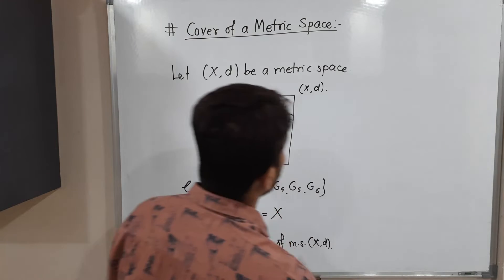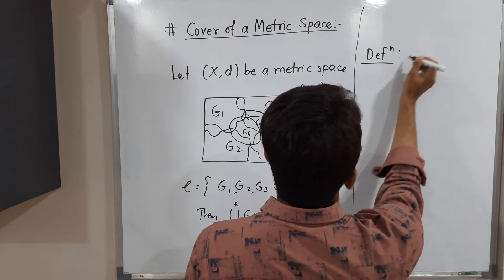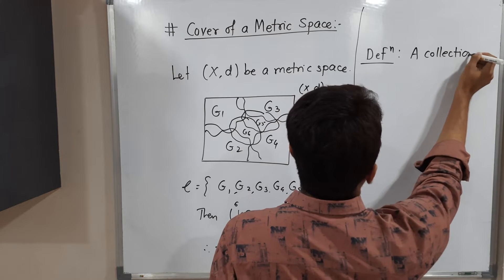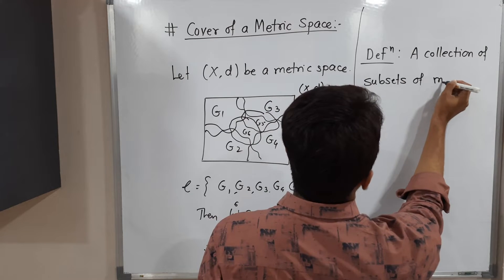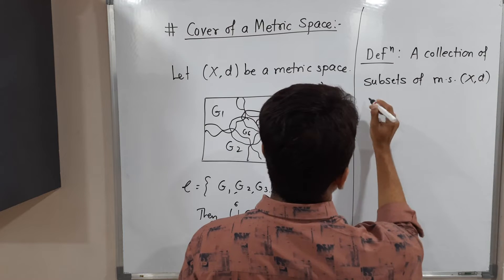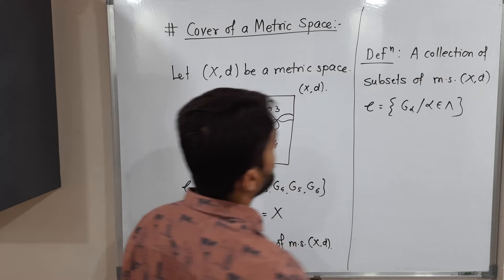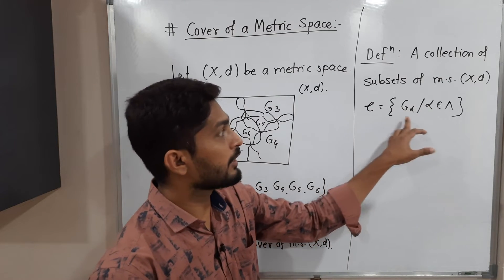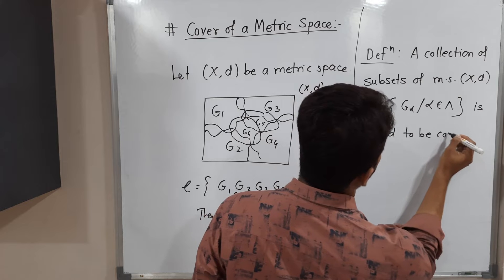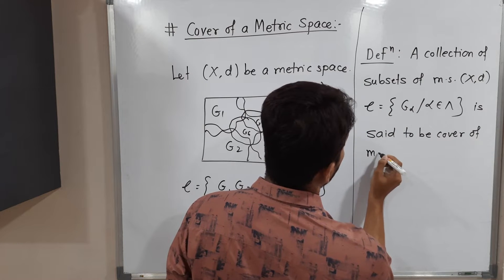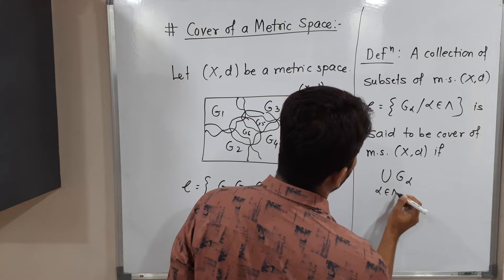So let me write the actual definition. A collection of subsets of metric space X, D — script C equals {G_alpha, alpha belongs to lambda} — is said to be a cover of metric space X, D if the union of G_alpha, alpha belongs to lambda, is equal to X.